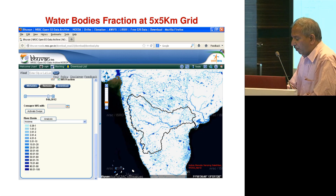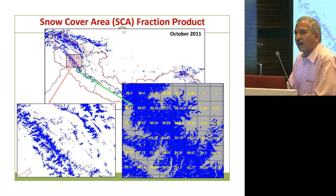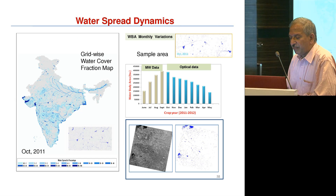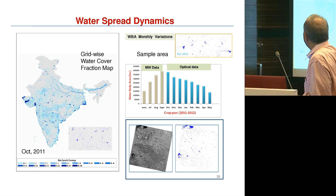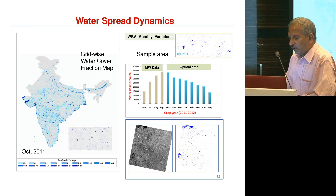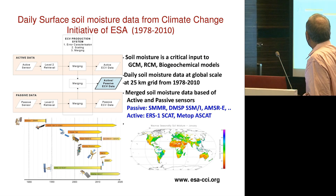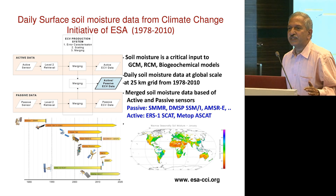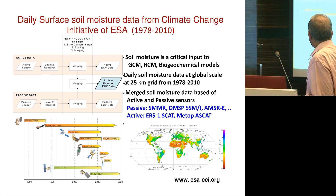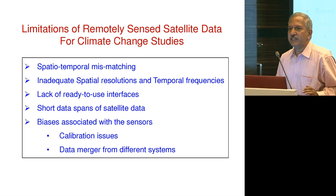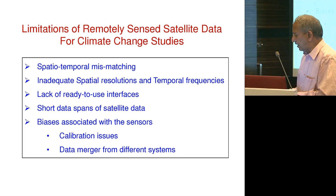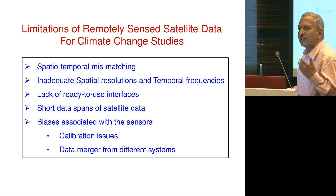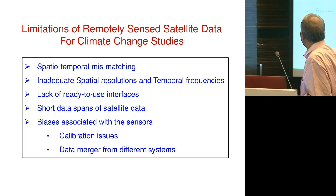Certain products are under development — water bodies fraction is under development, snow cover area algorithm has already been developed and the products can be used in different models, and water spread dynamics procedures have been standardized. Regarding soil moisture — the European Space Agency under its Climate Change Initiative is keeping 13 ECVs, of which daily soil moisture data is available on a quarter-degree grid. They have reprocessed total data from the 1970s through 2011, using both active and passive microwave radiometers and sensors, and this is very useful data. However, there are spatial-temporal mismatches — modelers require spatial-temporal information in a particular form whereas the data is available in a different way, and spatial resolution remains inadequate.